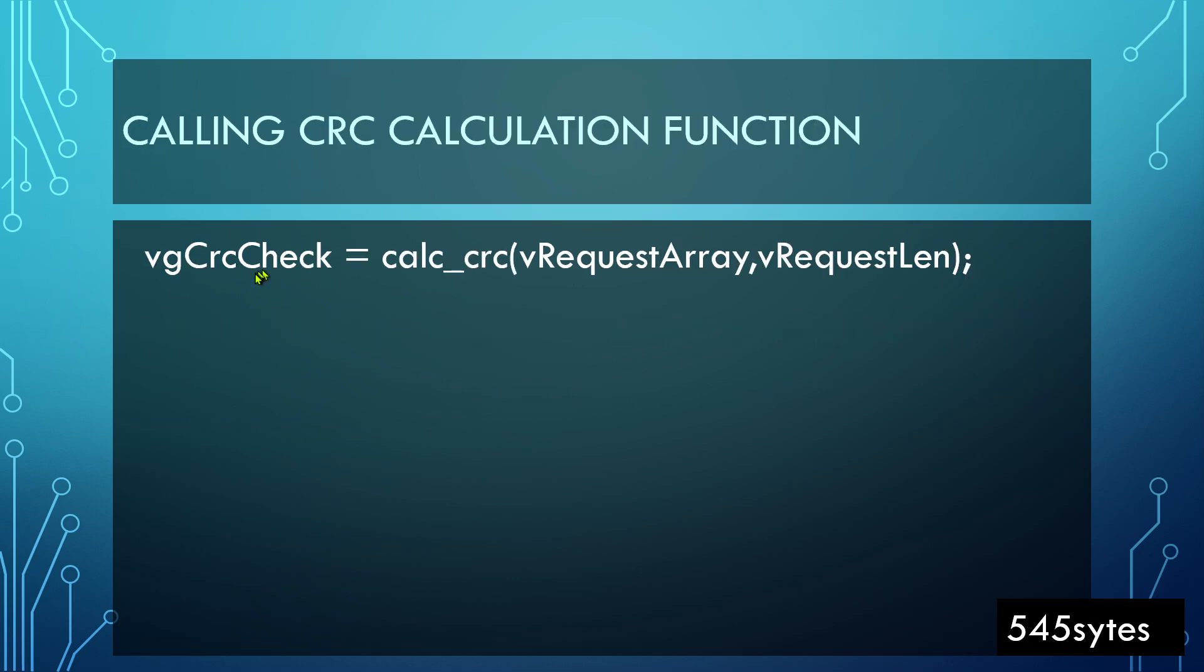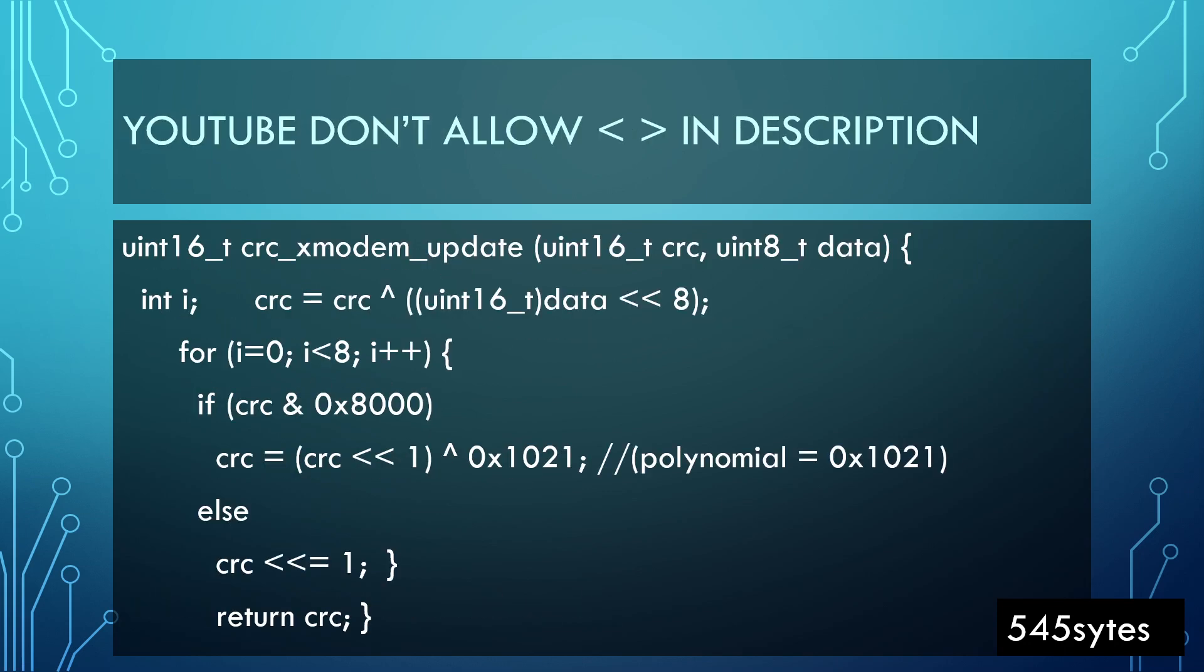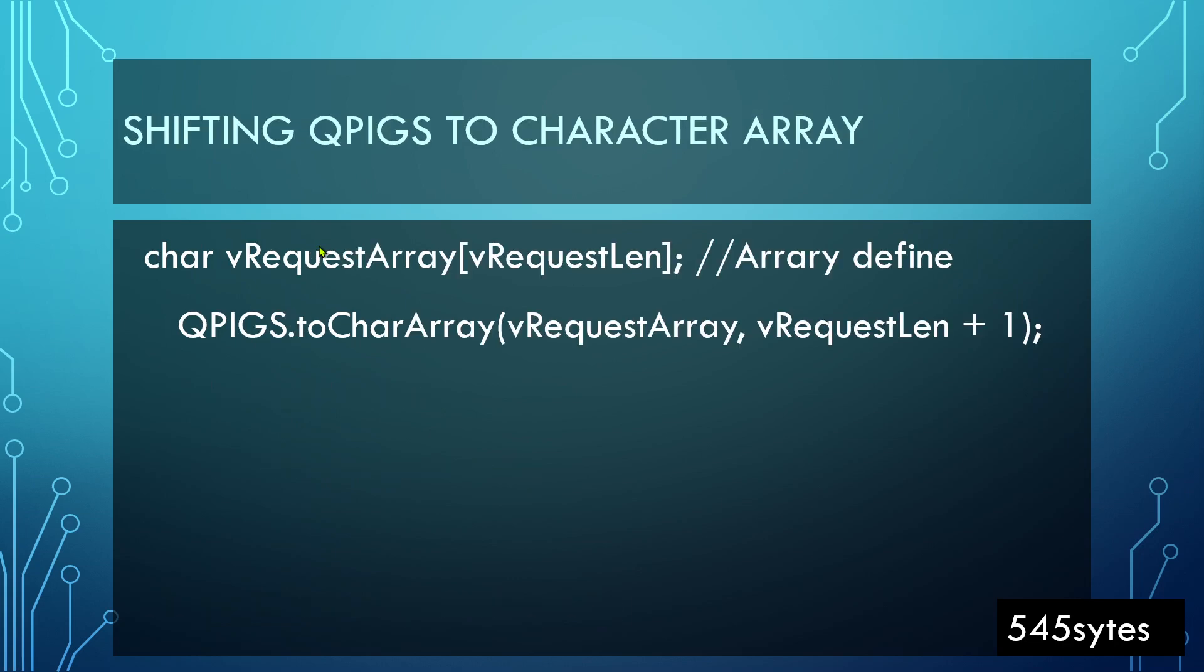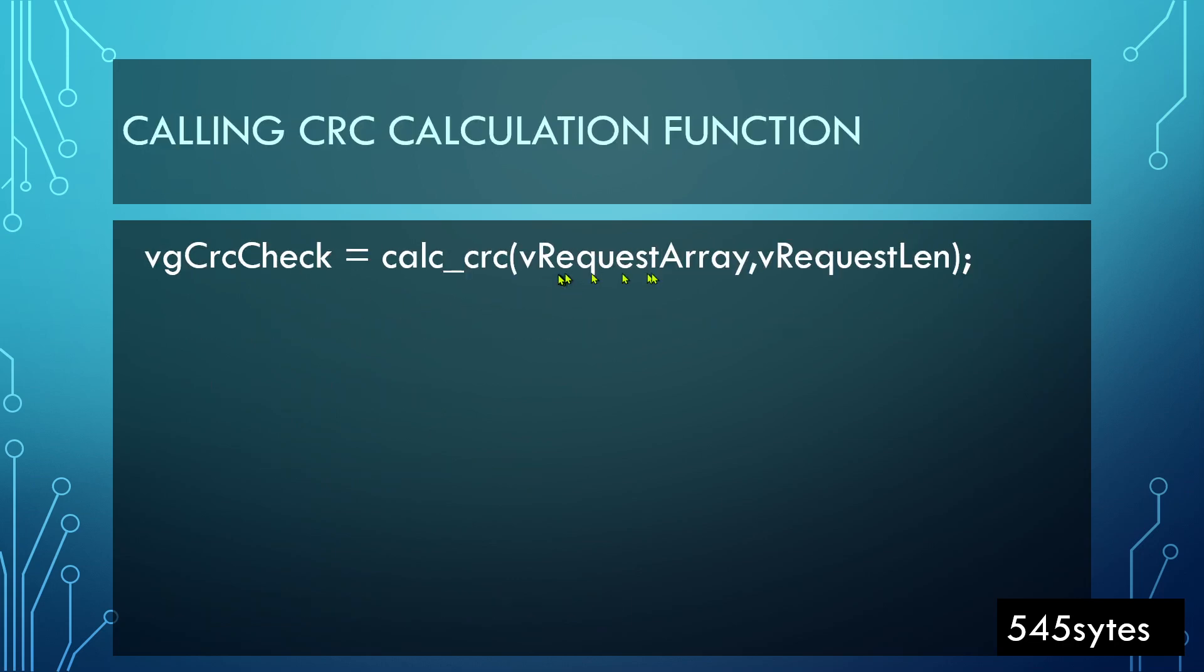When we need to call CRC calculation, we need to save the CRC in some string. This is the output and we are calling the calc_crc function. What we need to send are two things: one is the array and the other is a number. The array is the request array, the QPIGS, and this is the length of that array. We are sending this to this calculation.